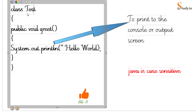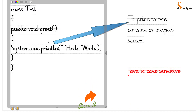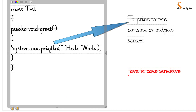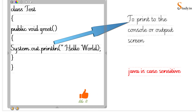For now, just write it exactly the way I have written here. Write 'public void greet' in small letters, open the curly brackets, then write 'System' — the 'S' is capital. Then dot, 'out', dot, 'println' — P-R-I-N-T-L-N. We will understand the meaning of these things later, but first let's create the Hello World program.